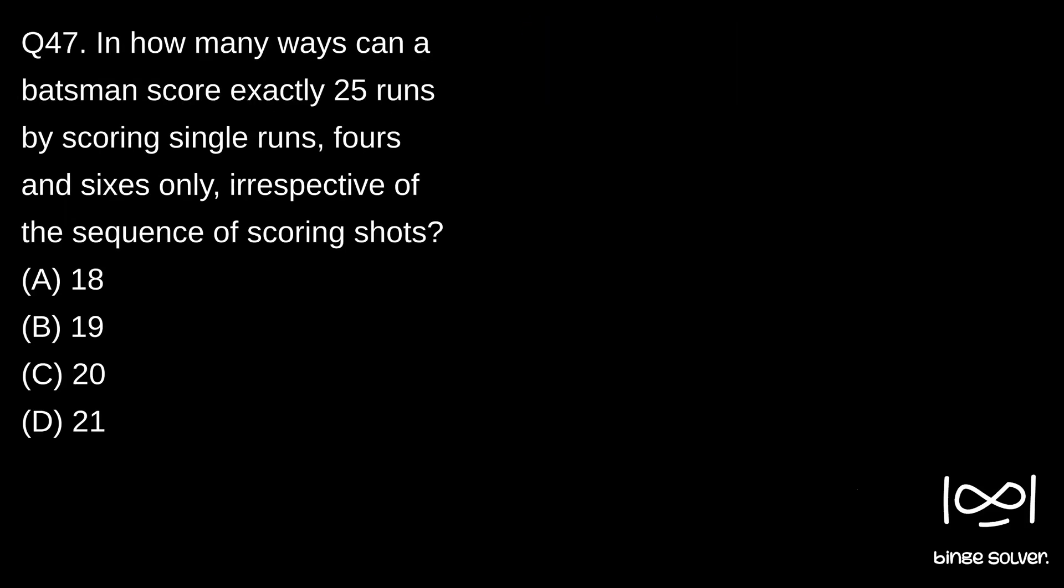Next question, question 47. In how many ways can a batsman score exactly 25 runs by scoring single runs, 4s and 6s only irrespective of the sequence of scoring shots? So the numbers he can score at one time will be 1, that is single run, or 4 or 6. So we will split it into different cases.